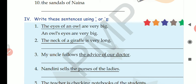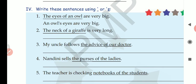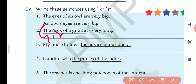Whatever words are underlined, you will change them, and the rest of the sentence will remain the same. The first one has been done for you: the eyes of an owl are very big. Owl is singular and not ending in S, so we write: an owl's eyes are very big.